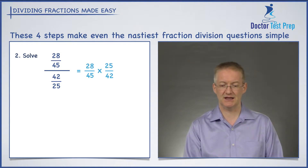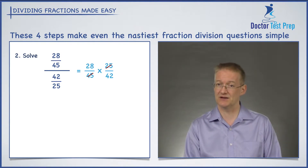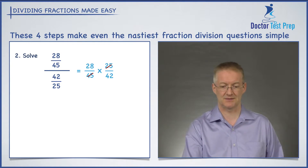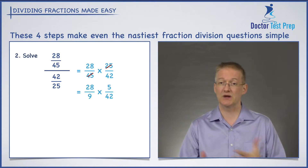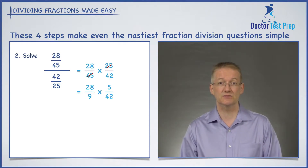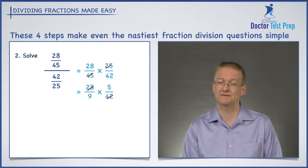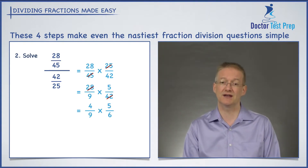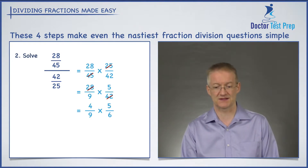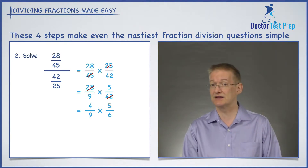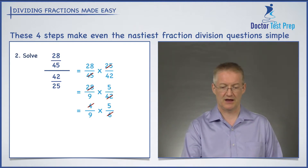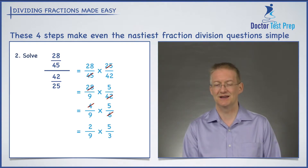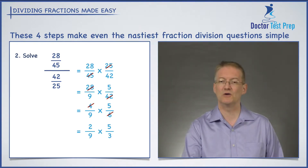Let's see what reduces. 5 goes into 45 nine times, 5 into 25 goes five times, so I've got 28 over 9 times by 5 over 42. Will anything go into 28 and 42? Yes — 7 will. 7 goes into 28 four times, 7 goes into 42 six times, so I'm left with 4 over 9 times by 5 over 6. Let's see if anything else reduces — the 4 and the 6 will reduce. 2 will go into both of them.